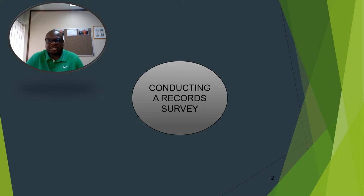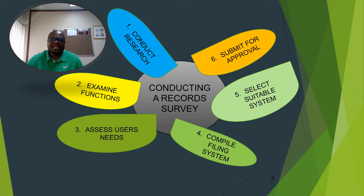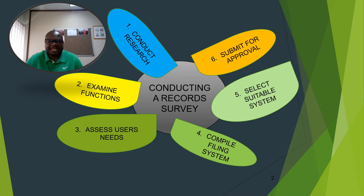Conducting a record survey — where do we start and what do we do? There are many factors involved. The first thing is to conduct the record survey or audit, examine functions, and assess user needs. This will give you an idea of what the functional subjects of the organization will be.